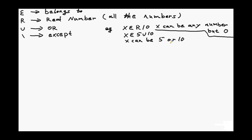I'll do an example here. For instance, when I write down 'x belongs to R except 0,' it means x can be any number but 0. If I have x belong to {5, 10}, then x is a number that can only be 5 or 10. It cannot be 7, because it's stated x belongs to 5 and 10.